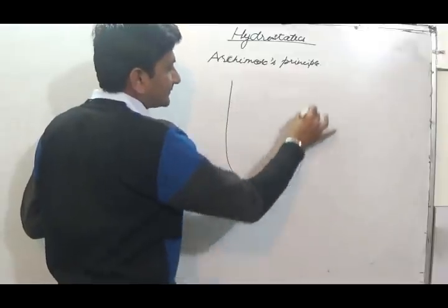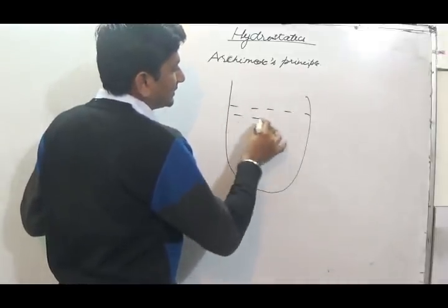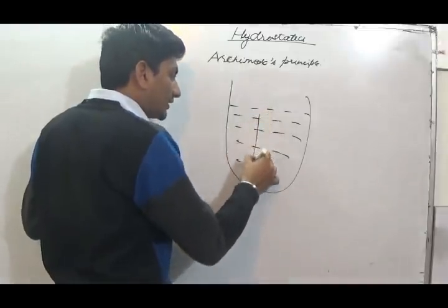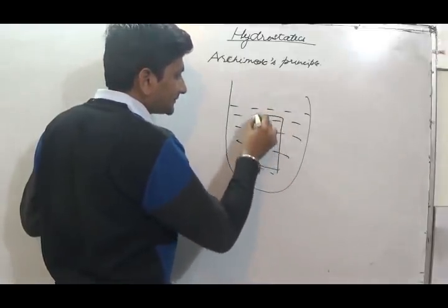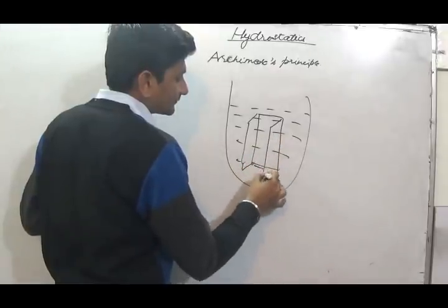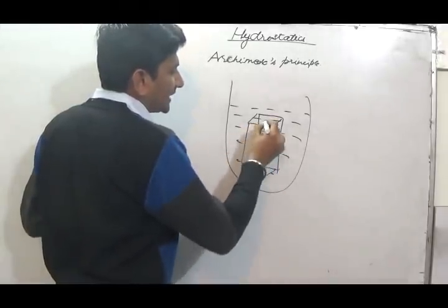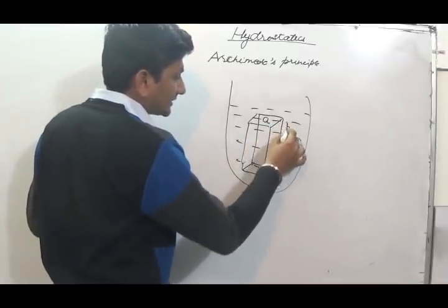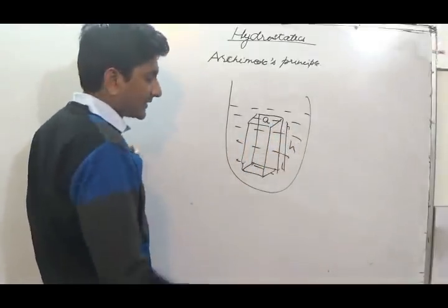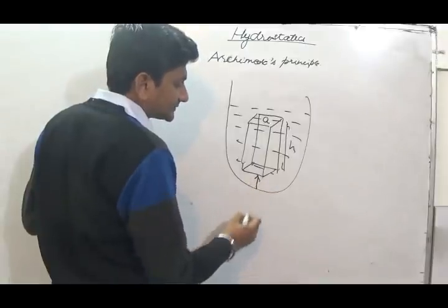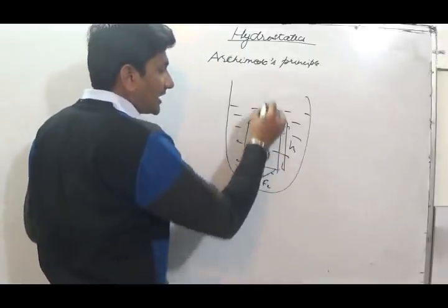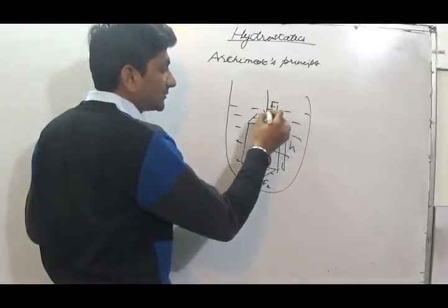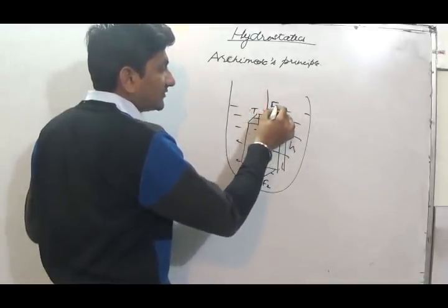How does this happen? Let us say there is a fluid at rest and a body is completely immersed. The area of cross-section is A and height is H. There will be a force acting upwards, F2, and there will be a force exerted by water above this surface, which will be equal to F1.